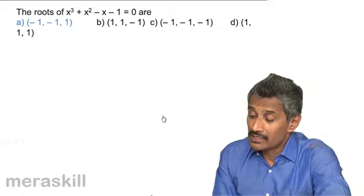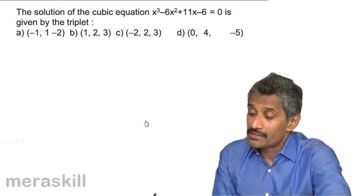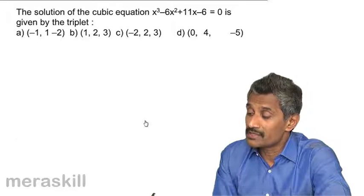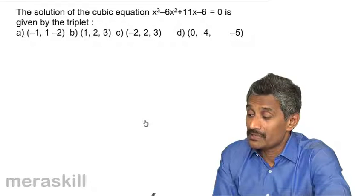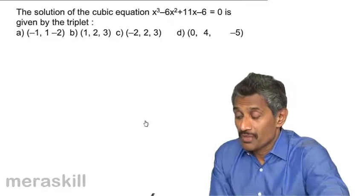Next, we have the cubic equation x³ - 6x² + 11x - 6 = 0. We need to find the triplet that represents its solution.